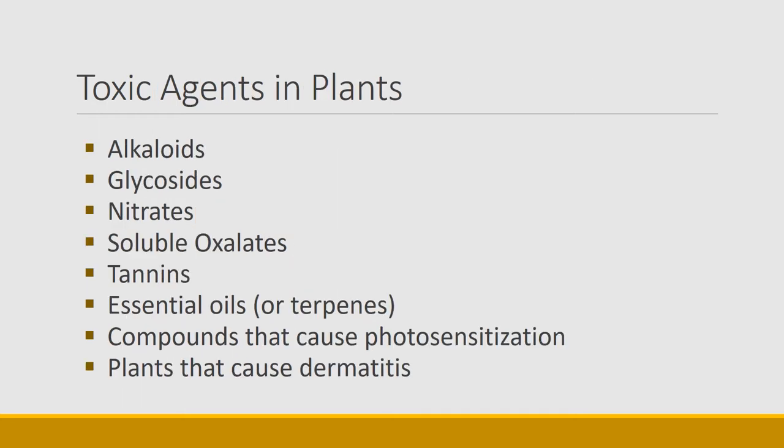We're going to talk about a whole series of classes of toxic agents in plants. We'll talk about alkaloids, glycosides, nitrates, soluble oxalates, tannins, essential oils, compounds that cause photosensitization, and also compounds that cause dermatitis. I'm going to go through these groups one at a time, giving examples of how animals avoid these plants and what we can do for management.